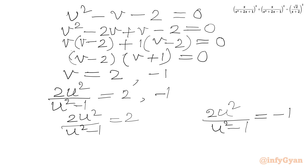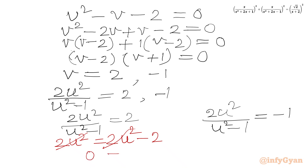Now we cross multiply the first case: 2u²/(u²−1) = 2. Cross multiplying gives 2u² = 2u² − 2, so 0 = −2, which is not true. So from this equation we get no real solutions.